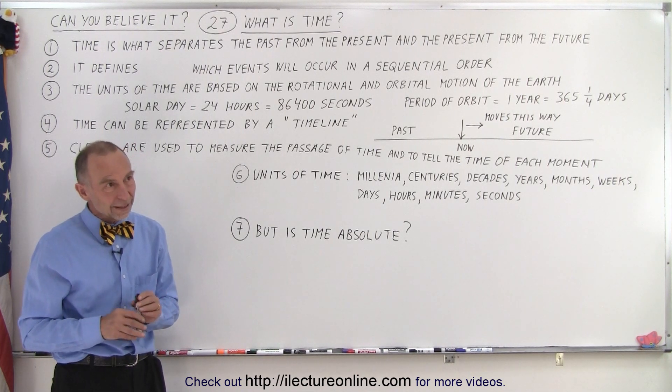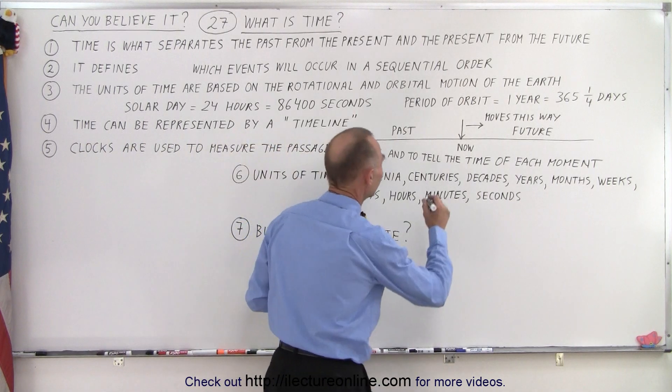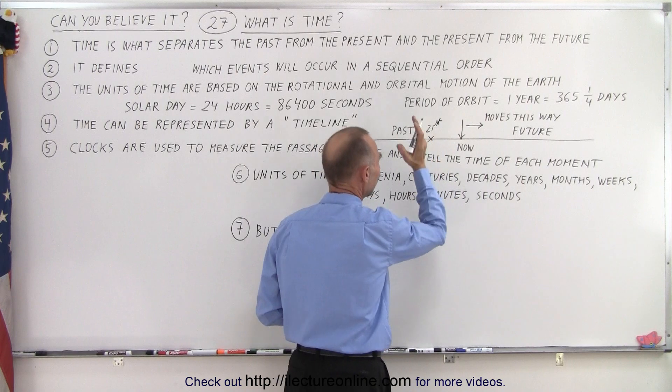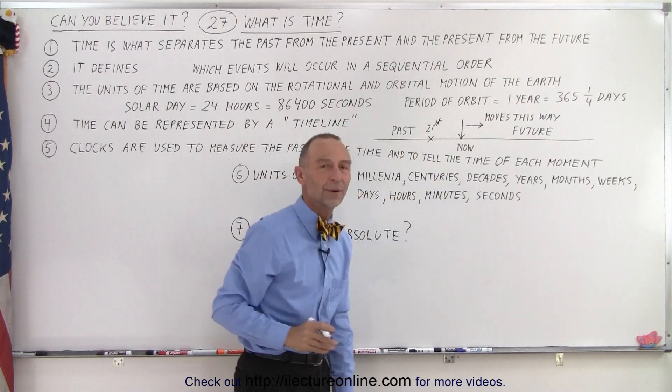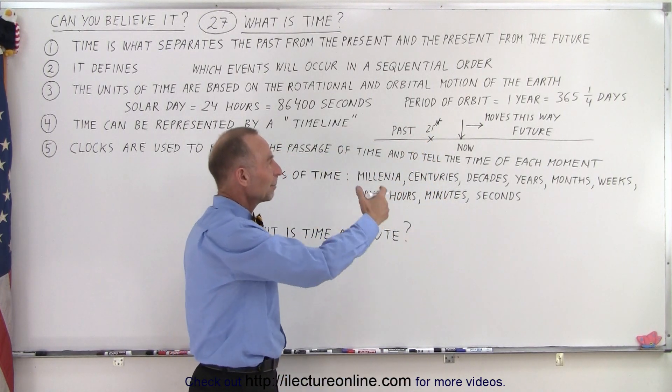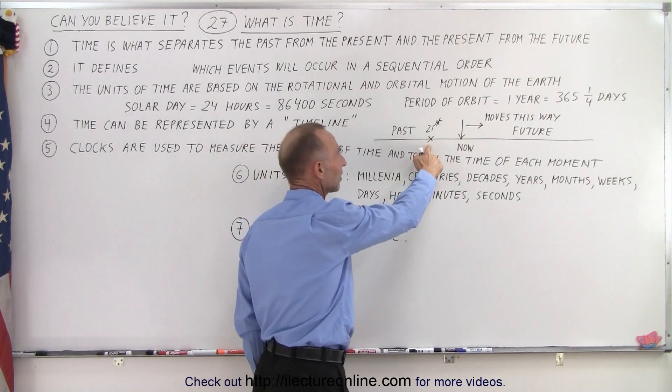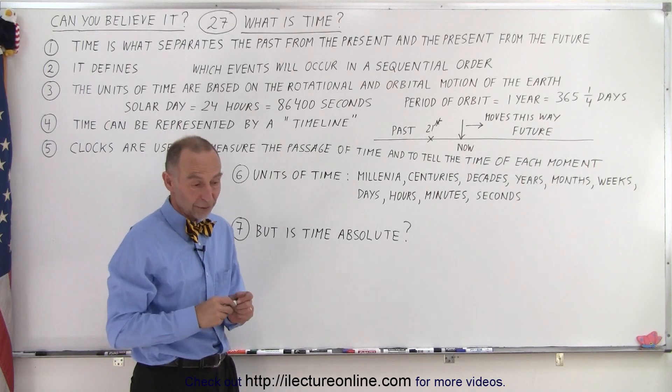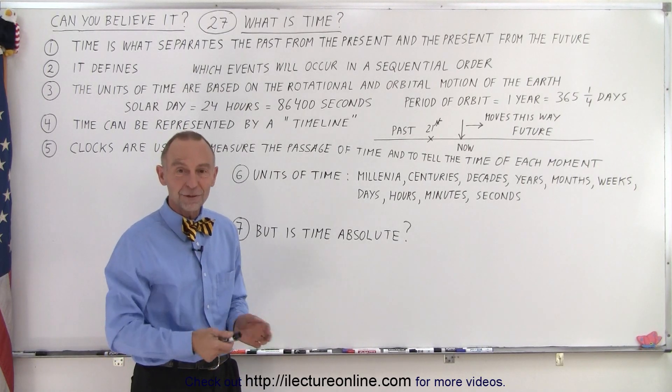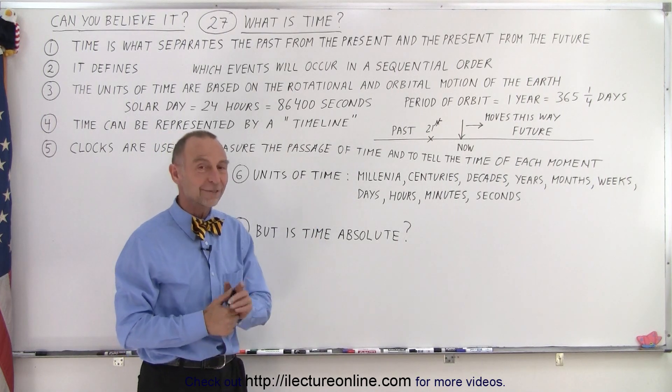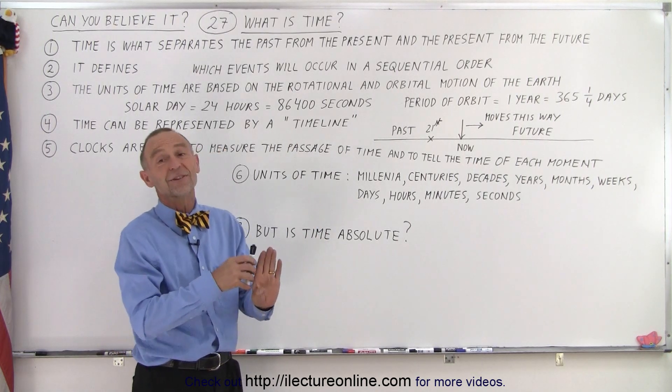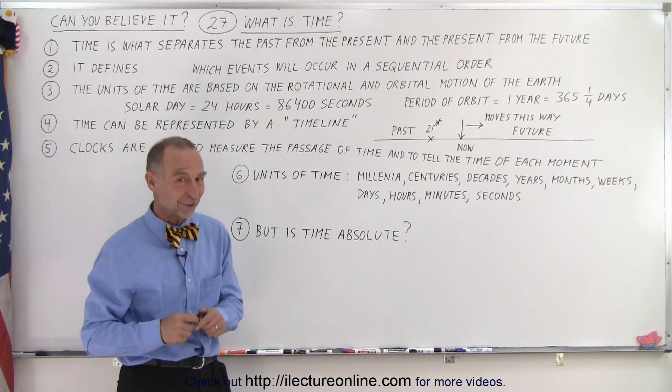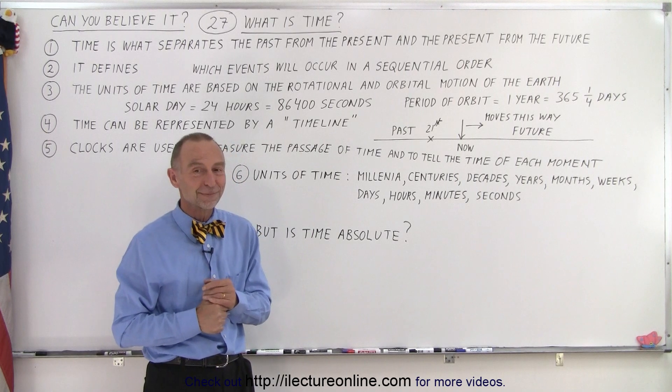What we could do is we can pick a certain point and say that was the beginning of the 21st century, started right there. And that will become our zero point. Then anything from then will be counted as the difference between the beginning of the 21st century and where we are now. So the now keeps moving, increasing in the time measurement relative to a given position. Or you can have a moving zero point, that now is always a zero point, and anything before that is negative and anything in the future is positive. You could do either one.